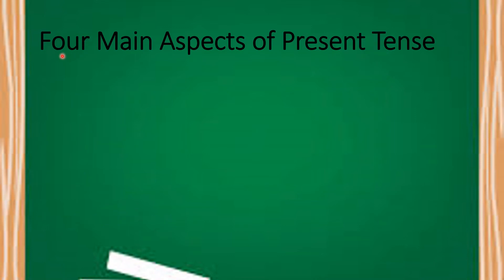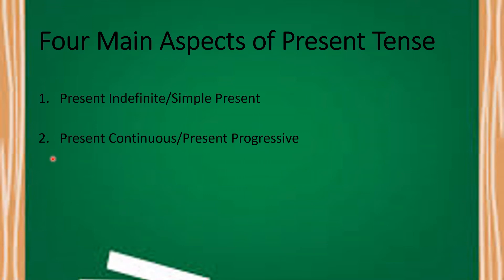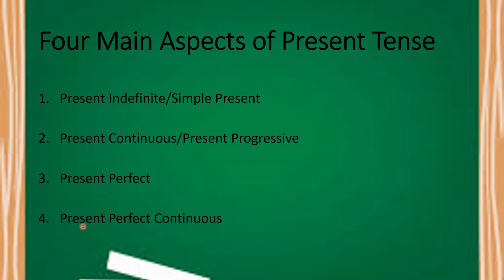Let me now tell you about the four main aspects of present tense. The first one is simple present or present indefinite. The second one is known as present continuous, also called present progressive. The third main aspect is present perfect, and the fourth is present perfect continuous.